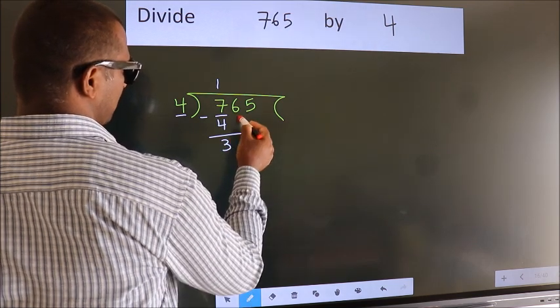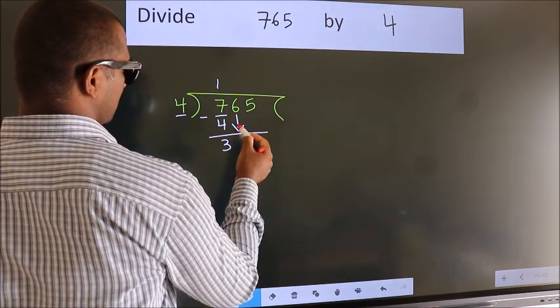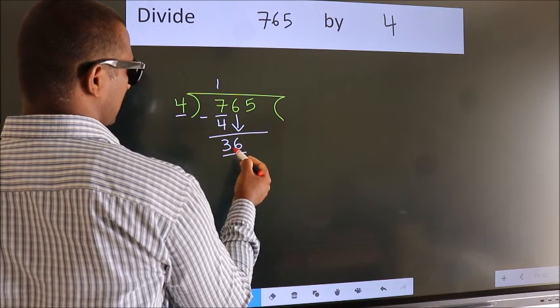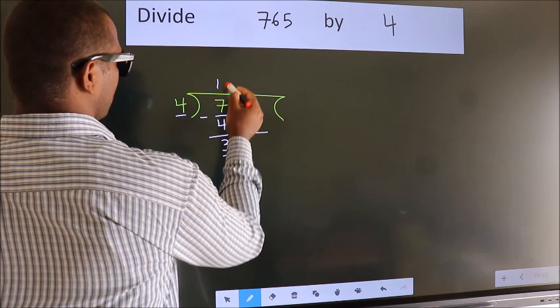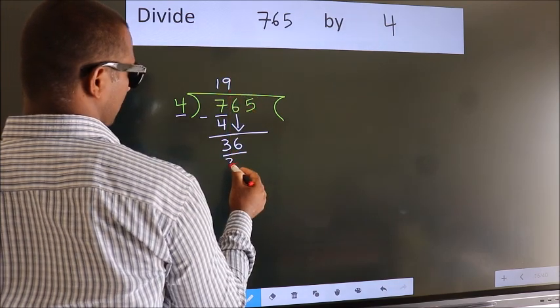After this, bring down the beside number. 6 down. So, 36. When do we get 36? In 4 table. 4 nines, 36.